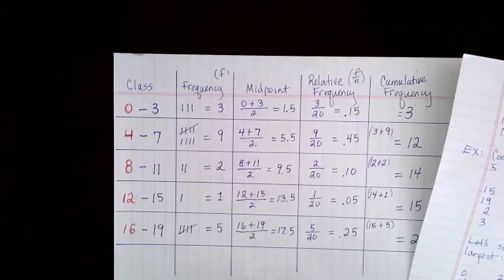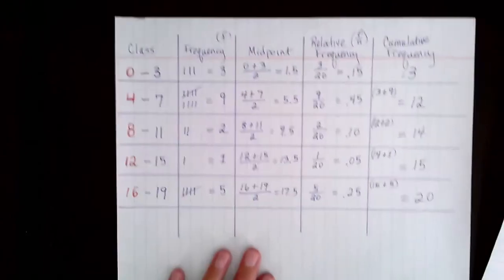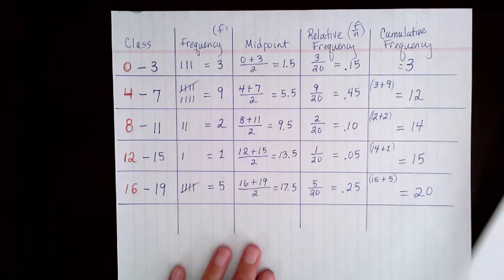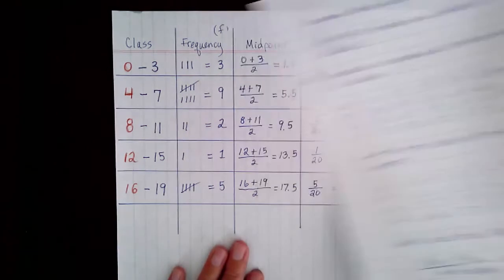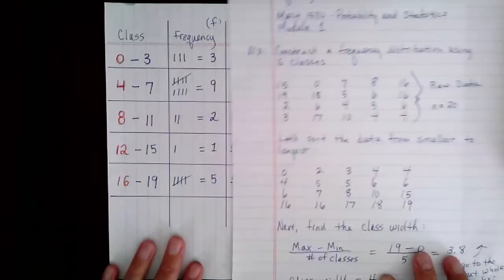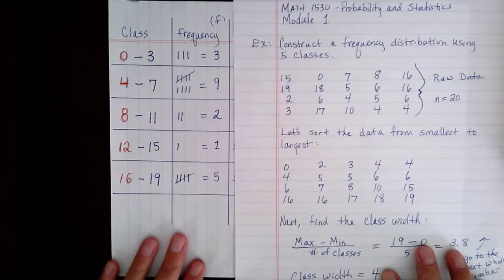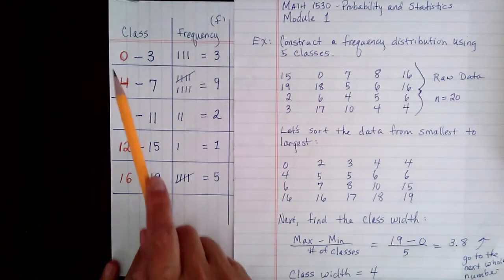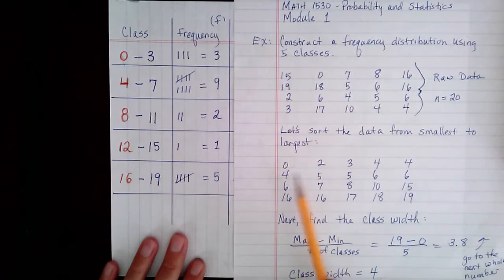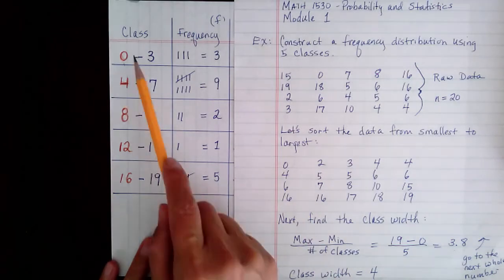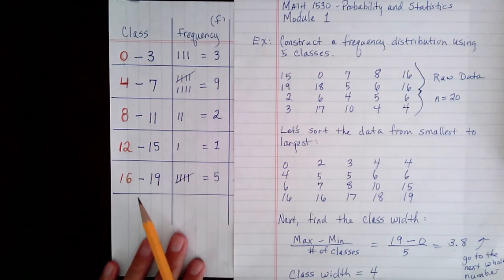Alright, let's look at how to construct the frequency distribution table. Now, let's begin with the classes. You always begin your first class with your smallest data value. Now, notice that I have written all of these lower limits in red. There's a reason I did that.